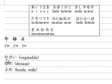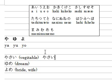Let's practice や. The word for や is やさい. やさい is a vegetable, so you type Y-A-S-A-I. The kanji for やさい is this one. はい。